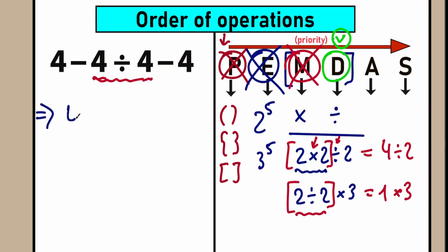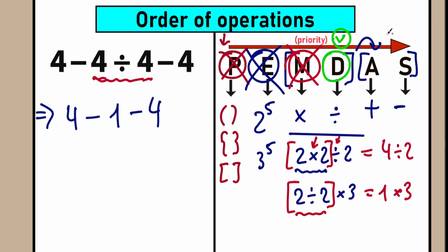Our first step — division — is complete. Now we don't have parentheses, exponents, or multiplication. In conclusion, we have addition and subtraction, which form one group with the same priority. A stands for addition, S stands for subtraction. We can evaluate left to right: 4 minus 1 equals 3, and then 3 minus 4 equals minus 1.